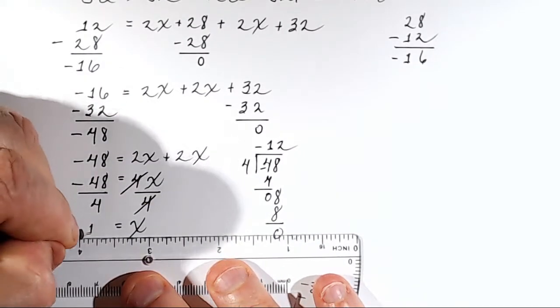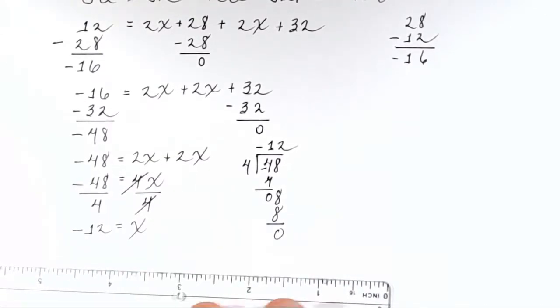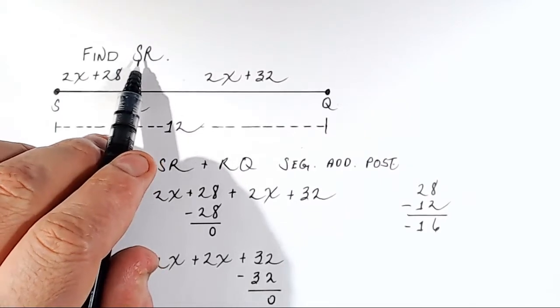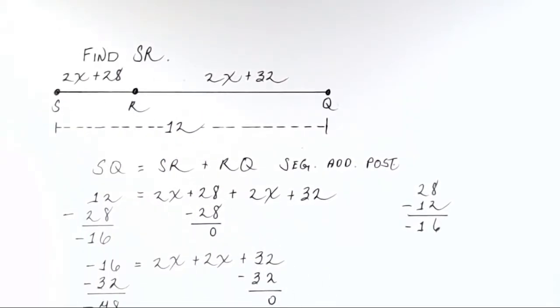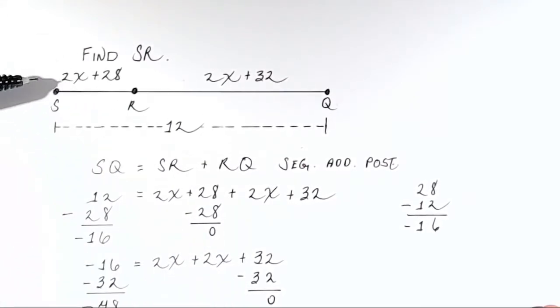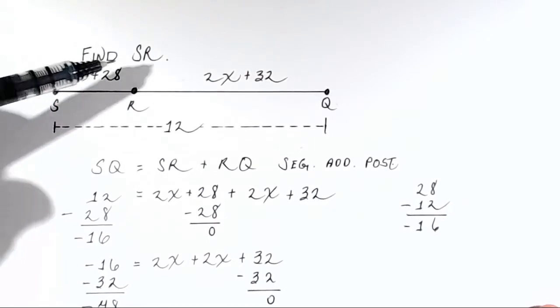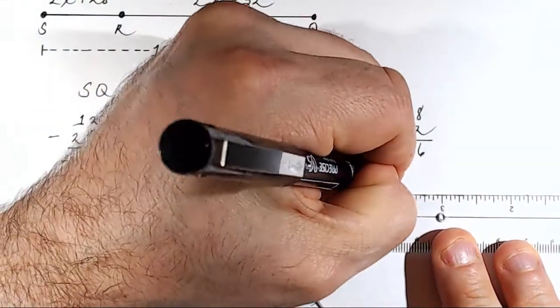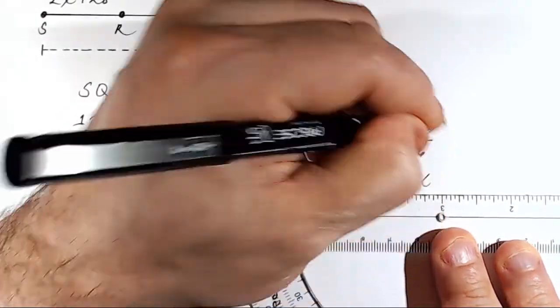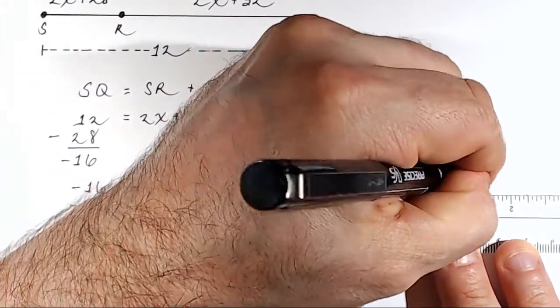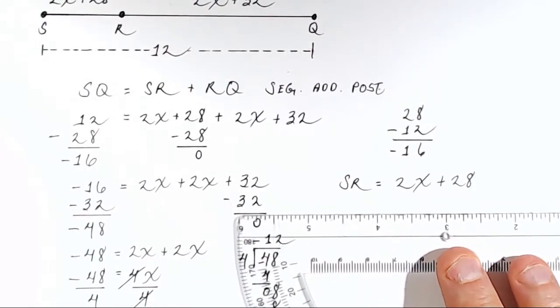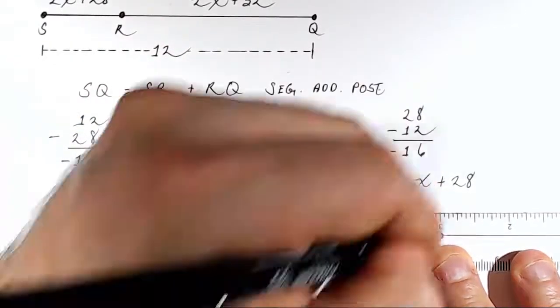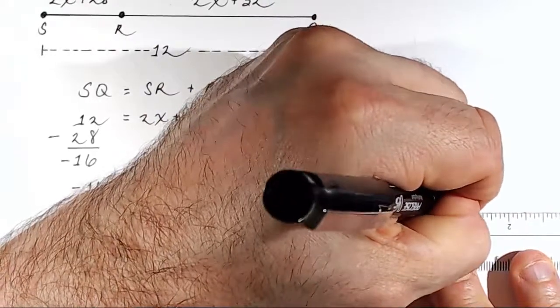That's very exciting. But it's actually not what the problem asked for. Okay, the problem asked us to find the distance SR, this distance. So x is going to be useful for finding SR, but it's not actually what the problem was asking us. So we are given that the distance SR is 2x plus 28. All right, let's write that over here. SR is equal to 2x plus 28. And we'll write and x equals negative 12.